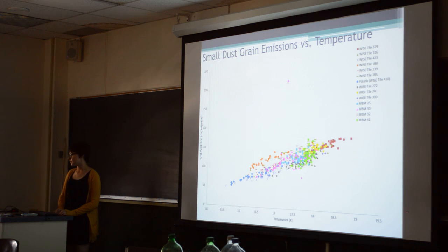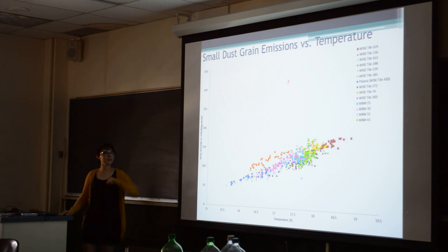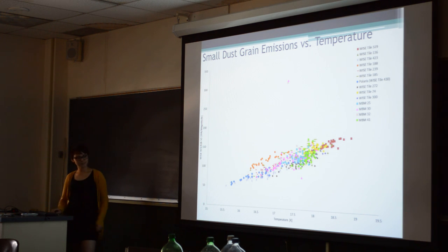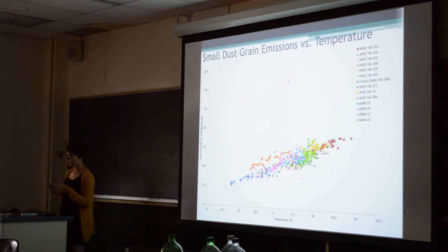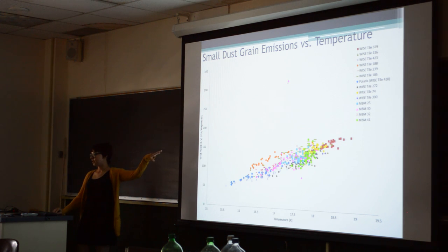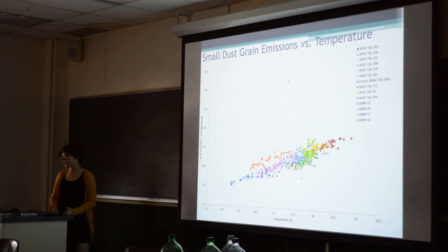An audience member asks about two outlier points on the plot. The presenter explains that some of the last regions looked at are molecular clouds, and those two outlier regions may be star forming regions or have something unusual going on. Both of those regions are very close together, so there may be an overlapping area — those were the only regions where anything like that was observed.